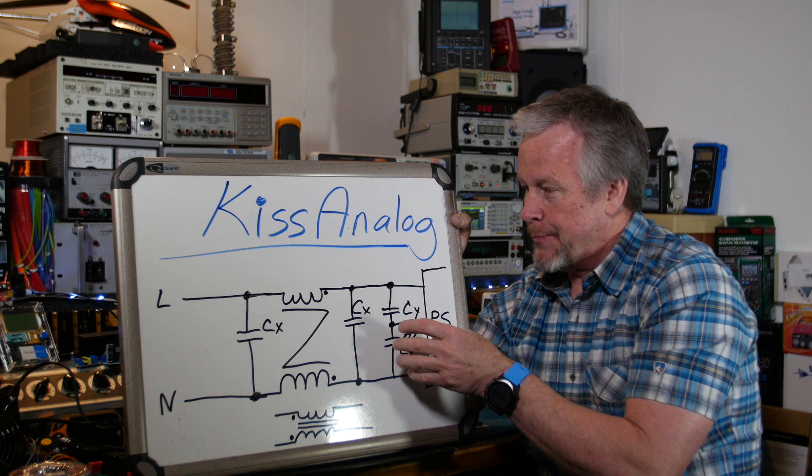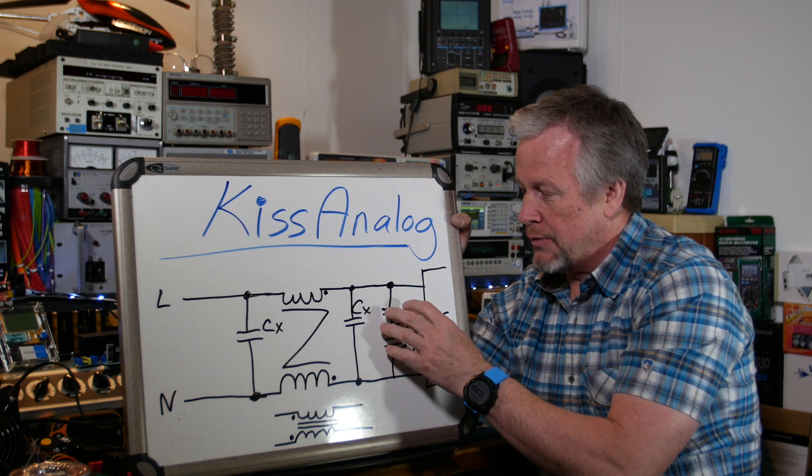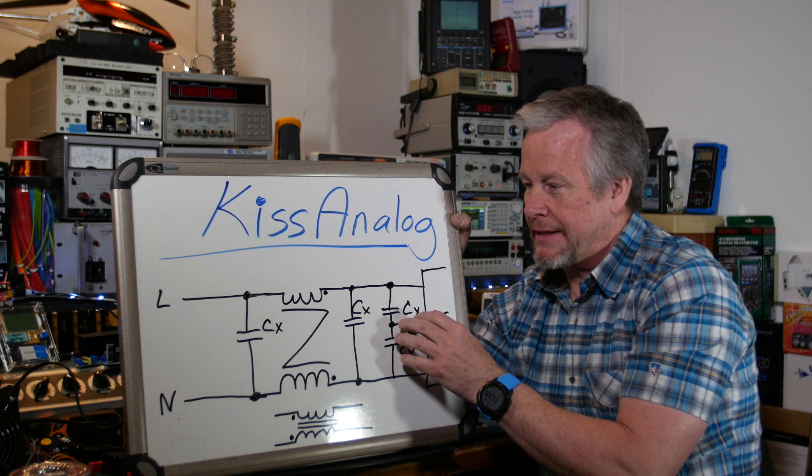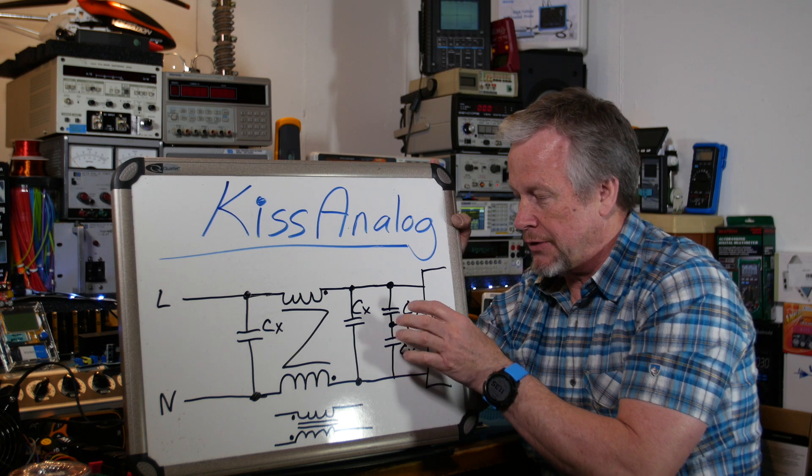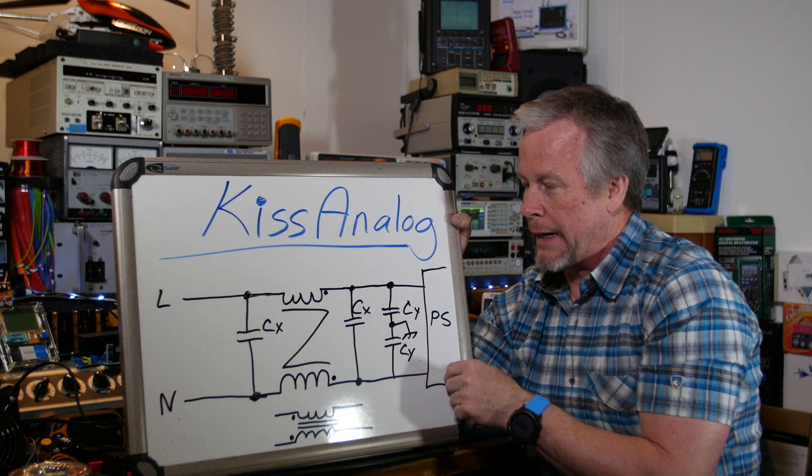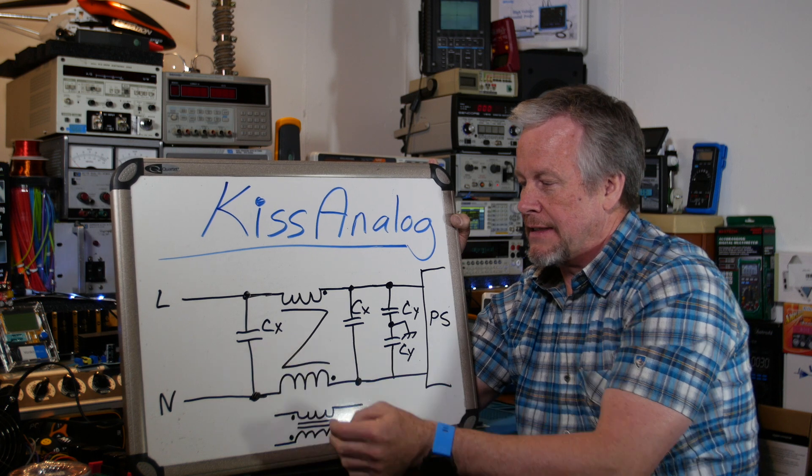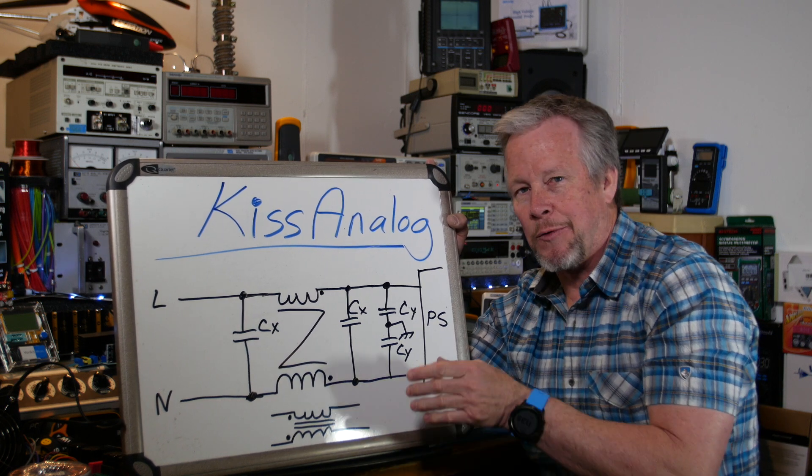So you want these guys to have extra insulation, extra dielectric between the plates on the capacitor. So these are double insulated. These are the Y caps because they're going to chassis. Anything going to earth ground, to chassis connection, is a Y cap. Line to line is X caps.